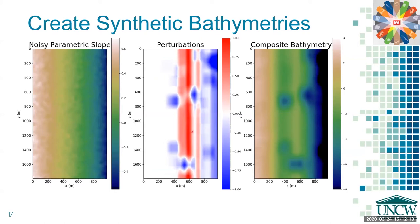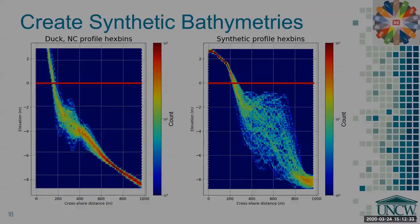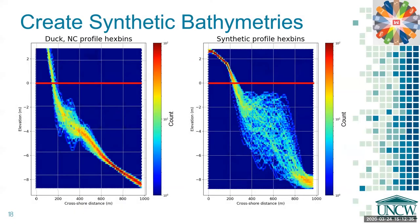To do this, we first create a noisy parametric slope, then create sandbar, trough, and spotlight perturbations around a mean of zero of random amounts, intensities, and locations. These are then combined, smoothed, and stretched to give a composite bathymetric profile. The synthetic approach generated a far more varied set of bathymetries, which should help the generalization of the ML algorithm. In both cases, the cross-shore cutoff is right around 8 meters of water depth, which is the water depth at which the following wave condition observations were taken.